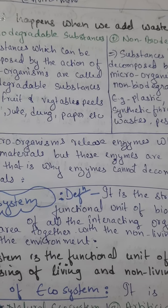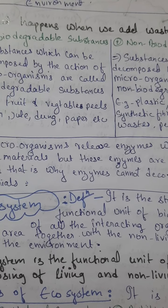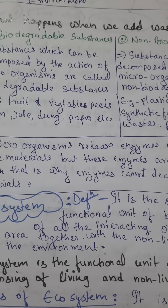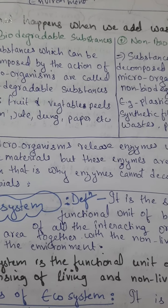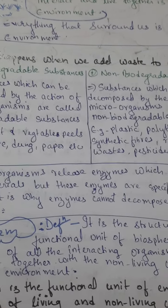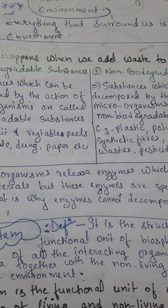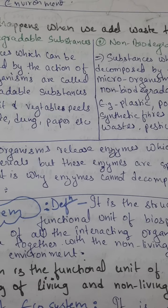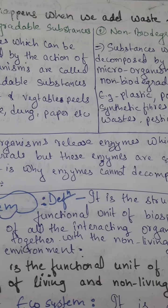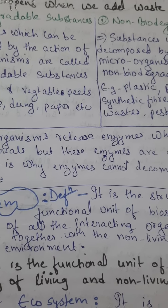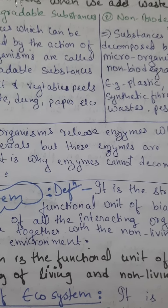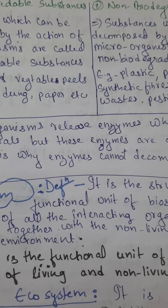A very sad truth: we, the humans, are very much responsible for destroying our environment. What happens when we add waste to our environment? We generate a lot of waste materials that are thrown away, and these wastes are of different types.